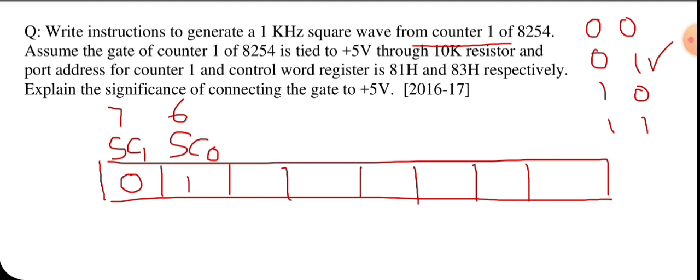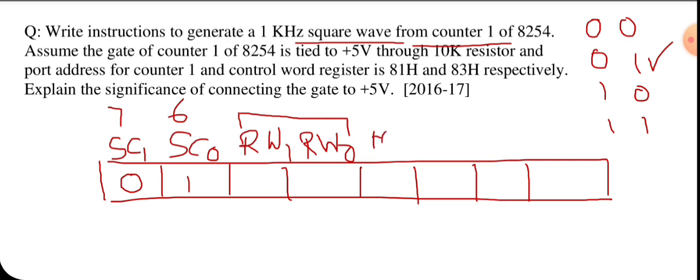Next are the RW1 and RW0 bits, used to write the count value — we will determine these after calculation. Now, which waveform is to be generated? It is a square wave. The bits M2, M1, M0 decide which mode is selected. In the case of 8254, mode 3 is used for square waveform generation. Mode 3 in binary is 0 1 1.